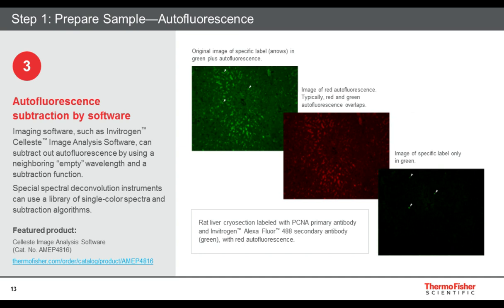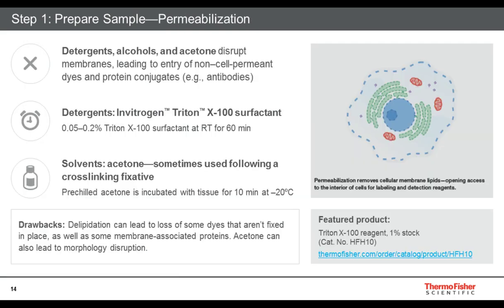Another way to deal with autofluorescence is through software manipulation. There are special spectral deconvolution systems that can do this automatically. Or you can use your imaging software: collect an image in your specific wavelength where you see both specific signal and green autofluorescence, then since autofluorescence is broad spectrum, take an image from the red wavelength where you have no specific labels, and subtract the red image from your green — leaving only the specific spots. Our Celeste imaging software can do that for you.